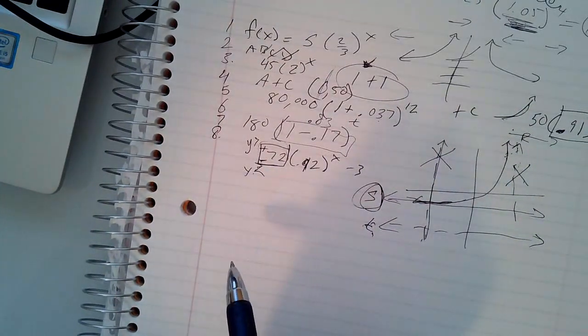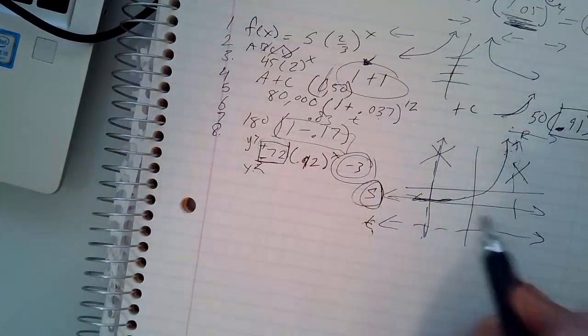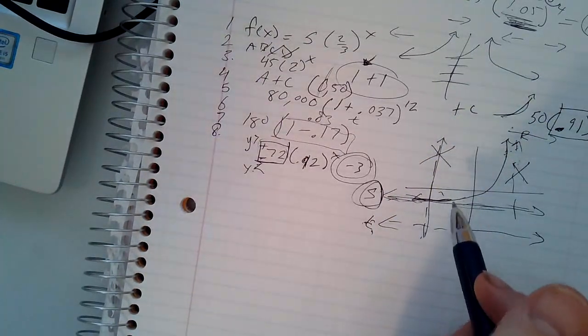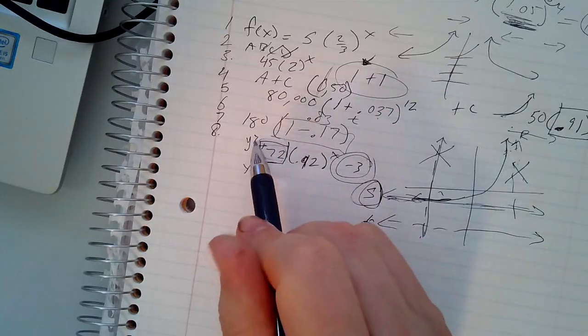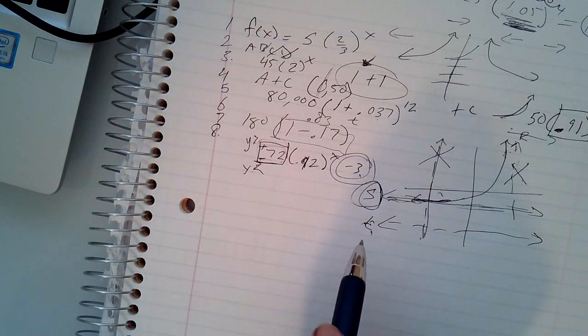And then what is Y greater than or less than? This number out here because that's the number that it can't cross. Remember, that's our asymptote. So Y is, this number is a positive 72, so Y is greater than -3. It's really that simple. It had to have been D.